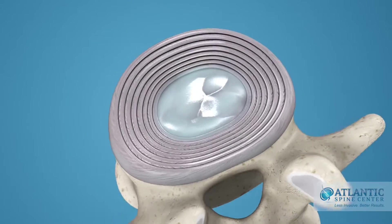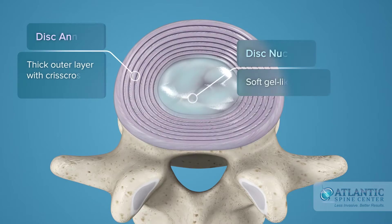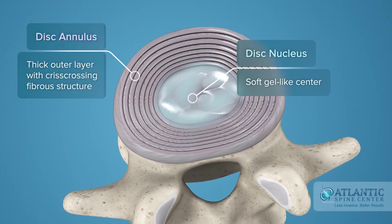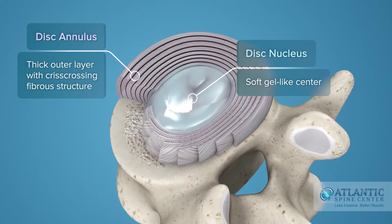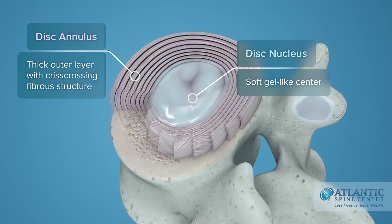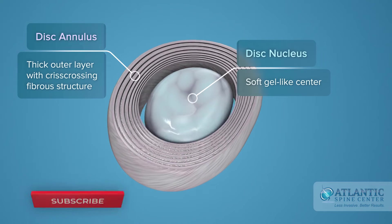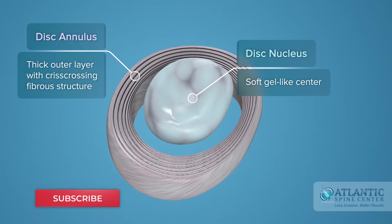Intervertebral discs consist of a thick outer layer with a crisscrossing fibrous structure — the annulus — that surrounds the soft gel-like center, the nucleus.